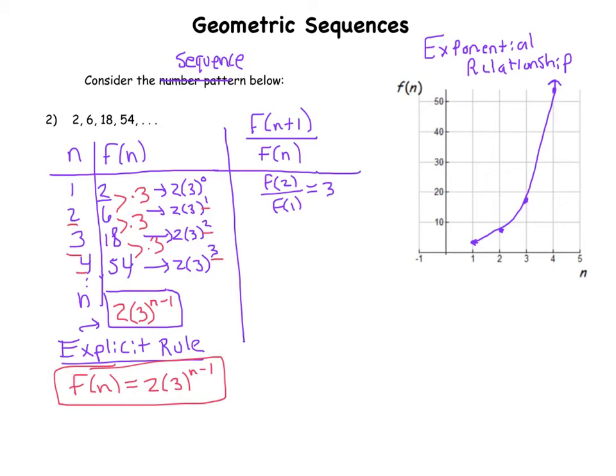And if I go to the next term, plug in a 2, that would be f of 3 divided by f of 2, and that's 18 divided by 6 which is a 3. And so hopefully you can anticipate what the rest would be.